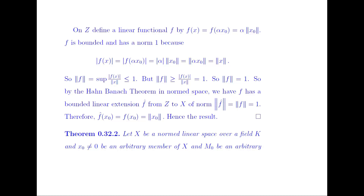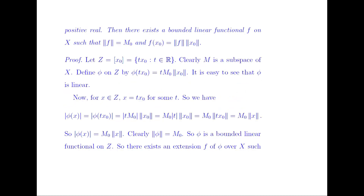The second theorem: Let X be a normed linear space over a field K and X₀ be any arbitrary member of X, and M₀ be an arbitrary positive real number. Then there exists a bounded linear functional f on X such that the norm of f is equal to M₀ and f(X₀) = norm(f) · norm(X₀). Let Z be the span of X₀, equal to {tX₀ : t ∈ ℝ}.